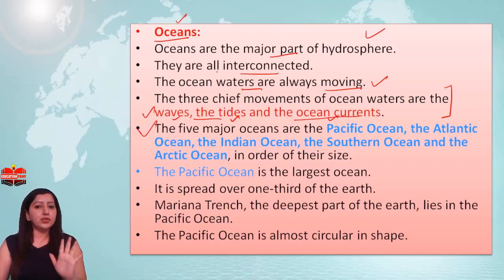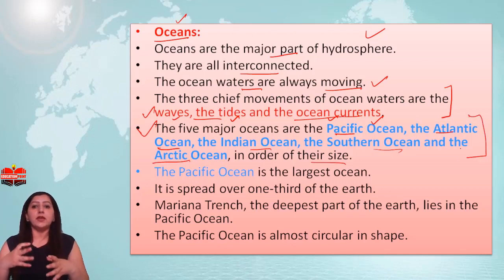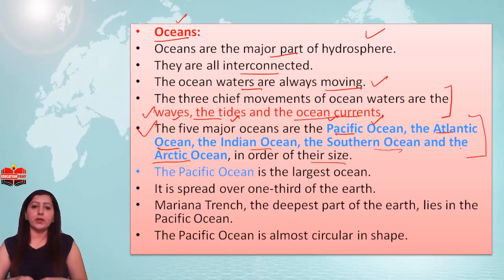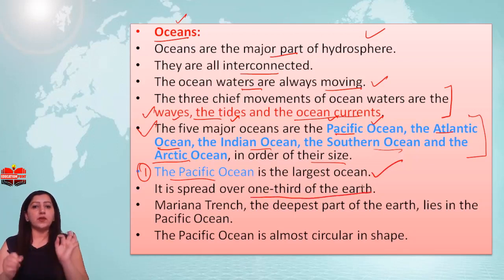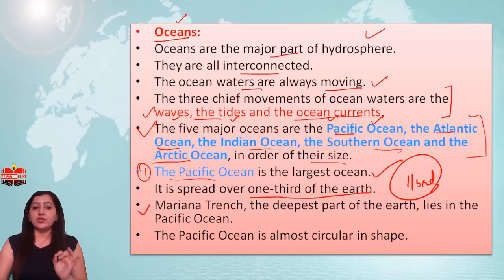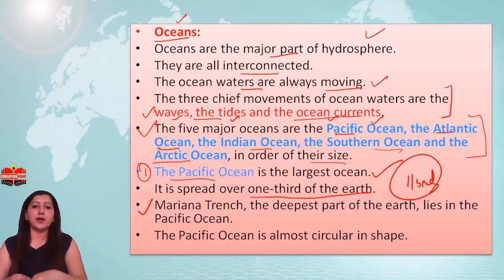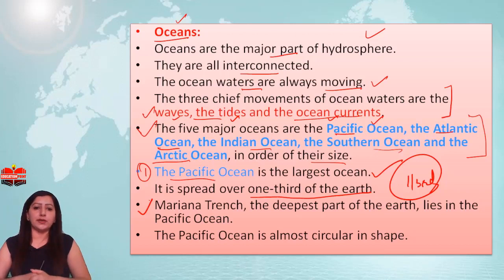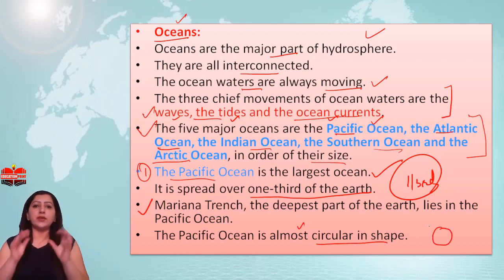We have a total of five major oceans: the Pacific Ocean, the Atlantic Ocean, the Indian Ocean, the Southern Ocean, and the Arctic Ocean, listed in order of their size. The Pacific Ocean is the largest ocean, and the Arctic Ocean is the smallest. The Pacific Ocean covers approximately one-third of the Earth's surface, and the Mariana Trench, located in the Pacific Ocean, is its deepest part. The shape of the Pacific Ocean is almost circular.